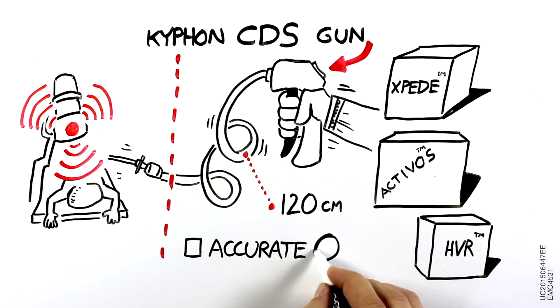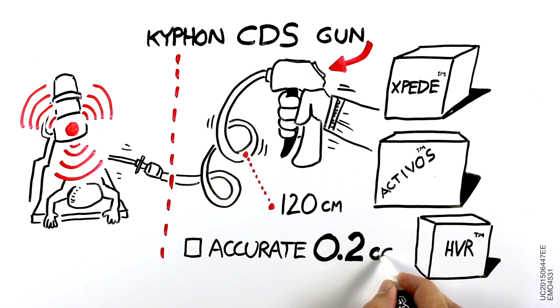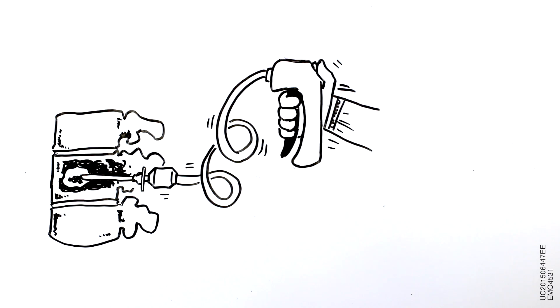Each squeeze of the trigger dispenses an accurate 0.2 cc of cement so the user is entirely aware of the quantity of cement being deployed. But this isn't where the control ends.